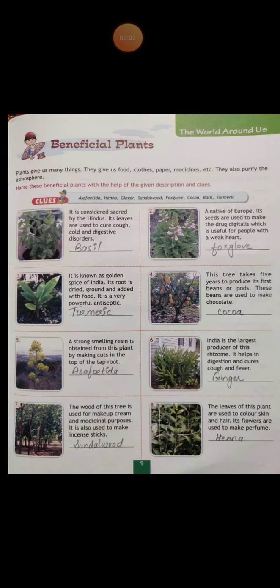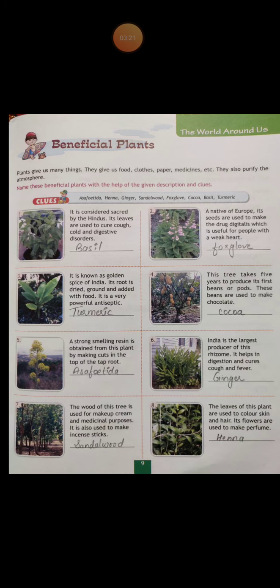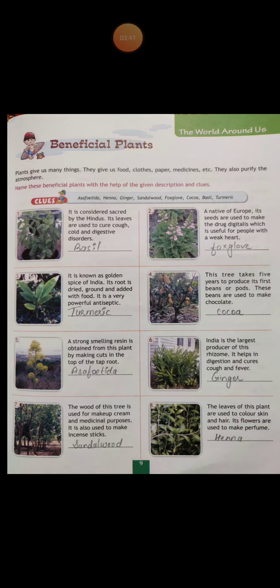The seventh plant is also used to make incense sticks, and the plant name is sandalwood. The last one: the leaves of this plant are used to color skin and hair, and its flowers are used to make perfume. Everybody uses it at home for functions like marriages or festivals — you put it on your hands and people use it on their hair. It is known as henna.